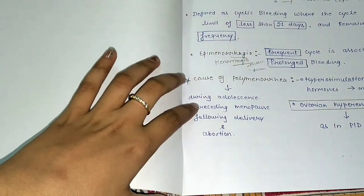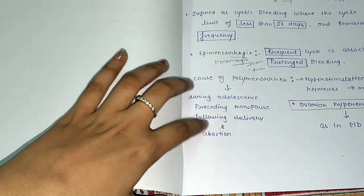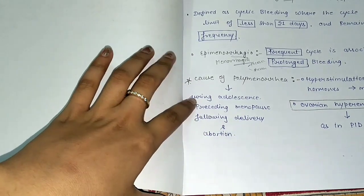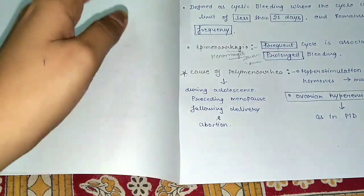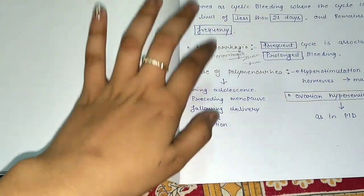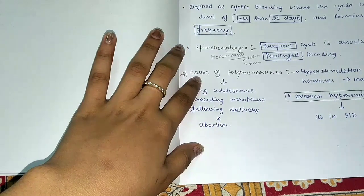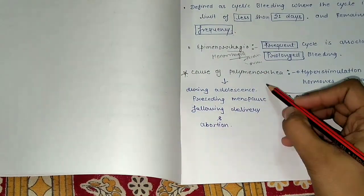During adolescence, preceding menopause, following delivery and abortion - during adolescence, or if there is menopause, or at the time of delivery, or at the time of abortion, these all are the points where we get more of polymenorrhea.